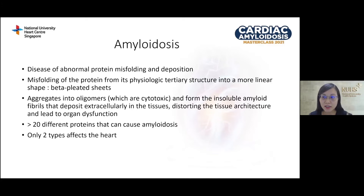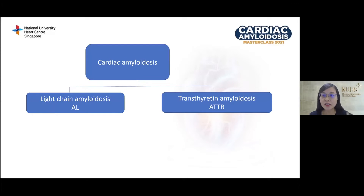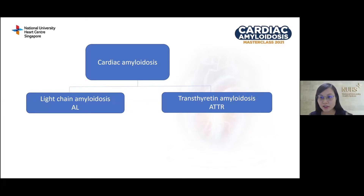There are many different types of proteins that can cause amyloidosis, but fortunately only two main types affect the heart. 95% of all cardiac amyloidosis is either due to light chain amyloidosis, also known as AL, or transthyretin amyloidosis, also known as ATTR. The A in AL and ATTR represents amyloidosis; L stands for light chain, while TTR is short for transthyretin.